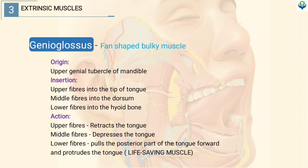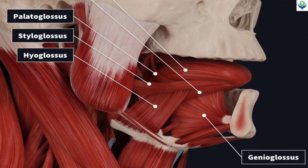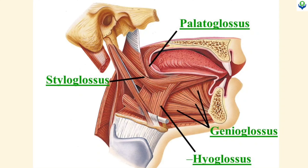Therefore, this muscle is called the life saving muscle. Here is another picture depicting all the extrinsic muscles of the tongue.